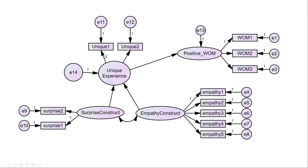On the reflective MIMIC items at the top, you have to constrain one path to one — if you don't, it will show as under-identified. Now we have our higher-order construct, unique experience, and we want to see how it relates to positive word of mouth: does a really unique retail experience relate to positive word of mouth? That's measured reflectively with three items.